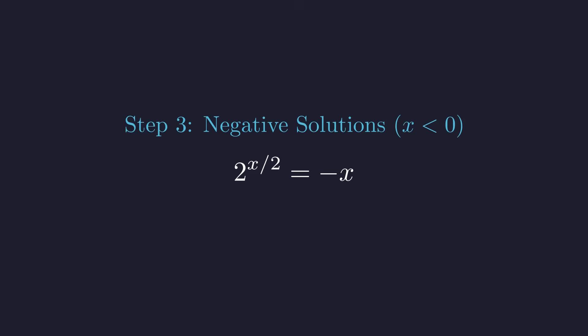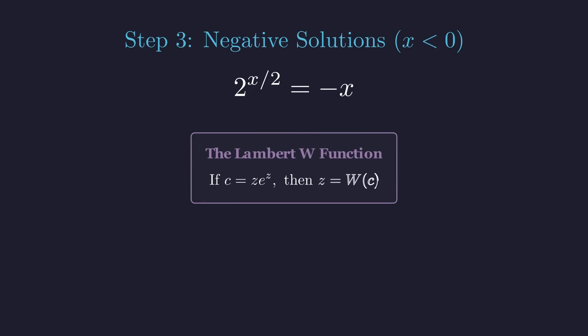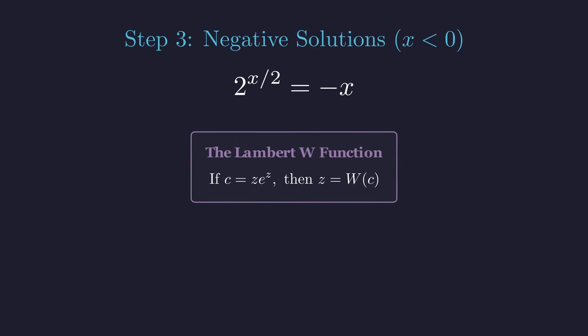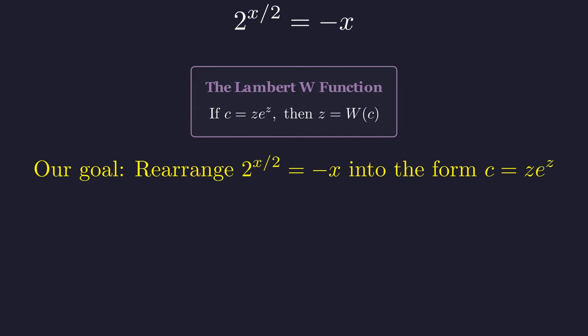Now, here's where things get really interesting. To solve this equation, we need to call upon a rather special function that you might not have encountered before. Meet the Lambert W function. It's essentially the inverse of the function z times e to the z. If you have some constant c that equals z times e to the z, then z equals W of c. It's built into most computer algebra systems and programming languages, though you won't find it on your typical calculator. Our strategy is to massage our equation into this special form. Some constant equals some variable times e to the power of that same variable. Then we can apply the Lambert W function to solve it.